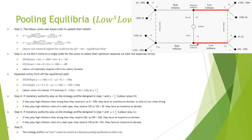So we have now defined two Perfect Bayesian Equilibria: one where the monetary authority plays low when strong and high when weak, and one where both types play high and gamma is less than 50%. Thank you for listening and I hope you enjoyed.